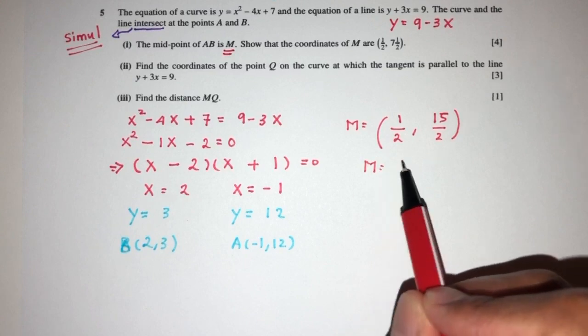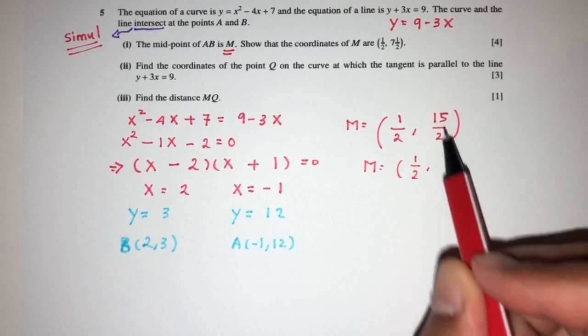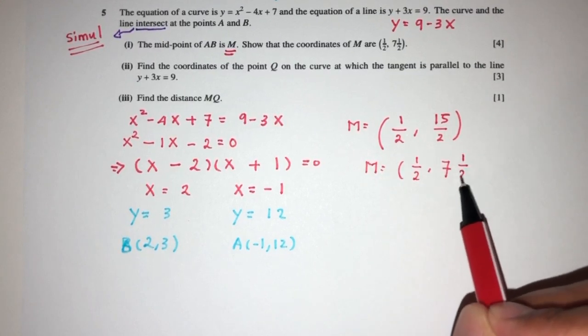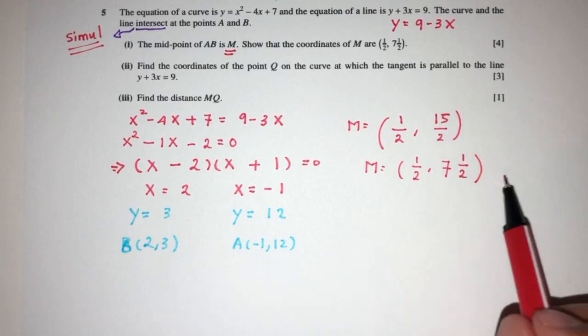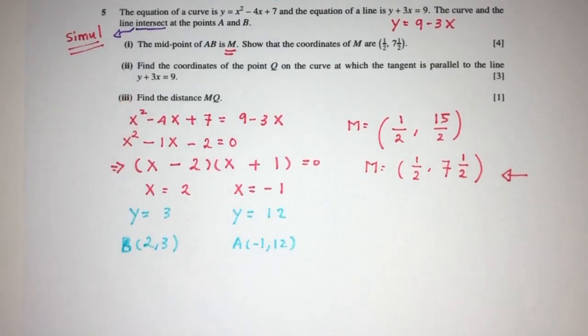And then we'll have 3 plus 12, that's 15 divided by 2. So the midpoint M is actually equal to (1/2, 7.5). This is shown as required for part 1 of the question.